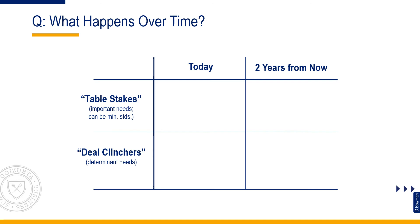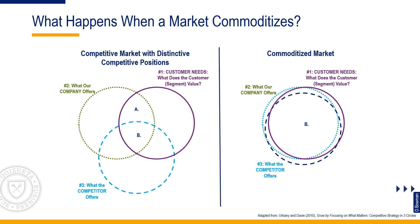Any framework that is a parsimonious description is trading off something. Three-circle analysis is silent on dynamics, so that must be considered separately. One way to do that is to consider table stakes and deal clinchers today and two years into the future. What often happens when completing this 2x2 is that it makes salient that today's deal clinchers (bottom left quadrant) are tomorrow's table stakes (top right quadrant). Your job then is to identify what goes in the bottom right quadrant. When a market commoditizes, this is easily conveyed using a three-circle analysis: Area B, the points of parity, gets large as customer needs are generally well known and largely met by each competitor's offerings.